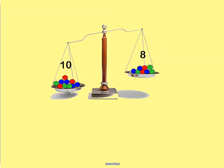See how they're level all the way across? That means this side weighs the same as this side. Look at these scales — this side has 10 marbles and the right side has 8 marbles. Are they balanced? No. 10 is more than 8, which is why it is weighing down heavier. Now how could we balance these two scales? We could add two more marbles to this side, so 8 plus 2 more would be 10, or we could take one marble from the left side and add it to the right — then they would both have 9.